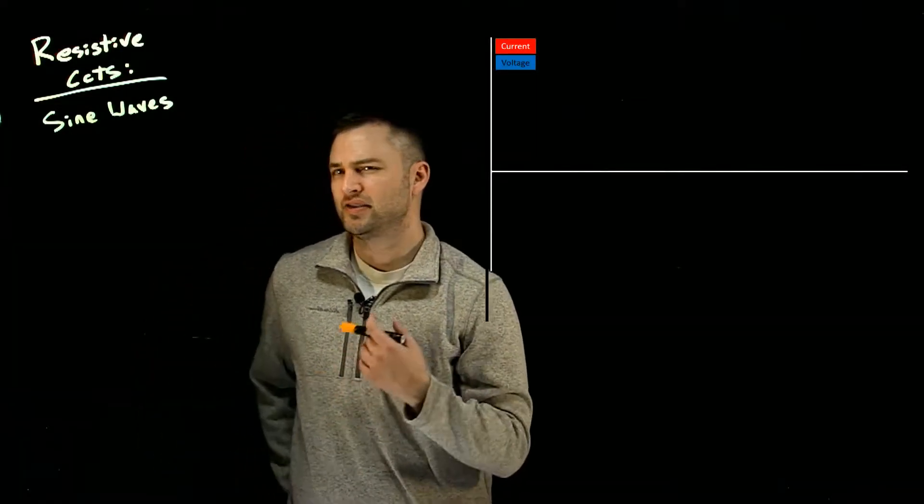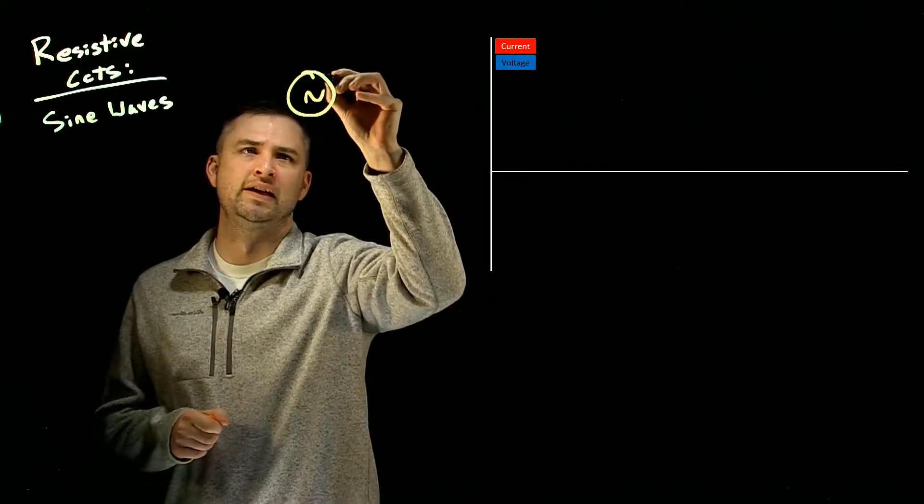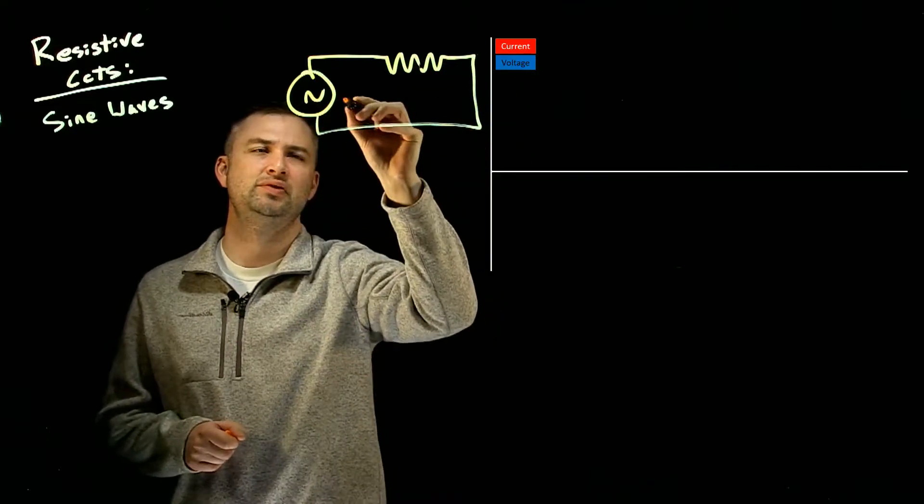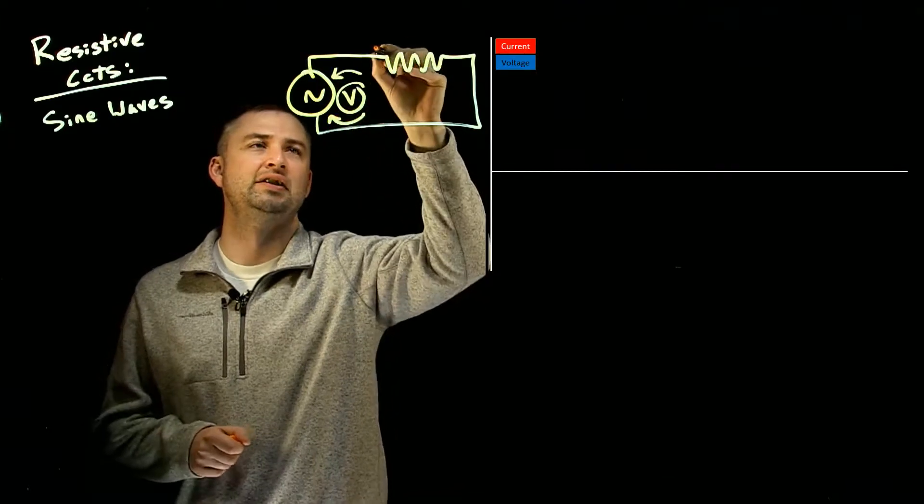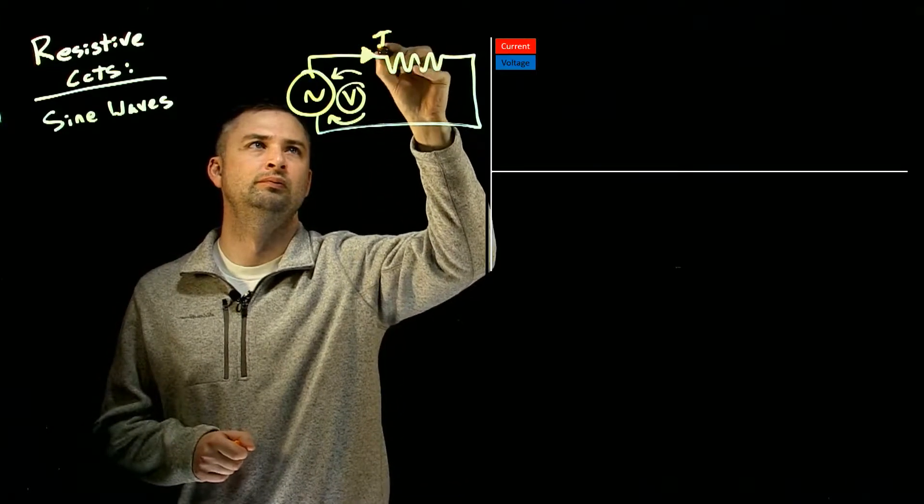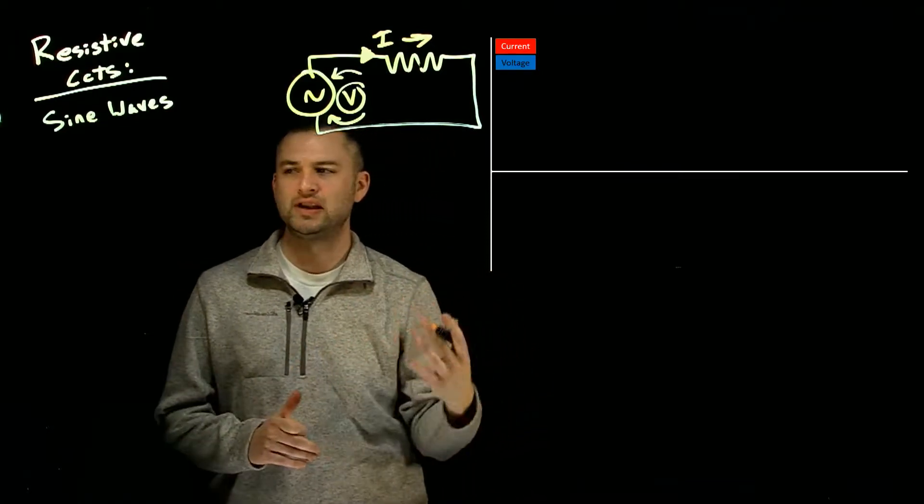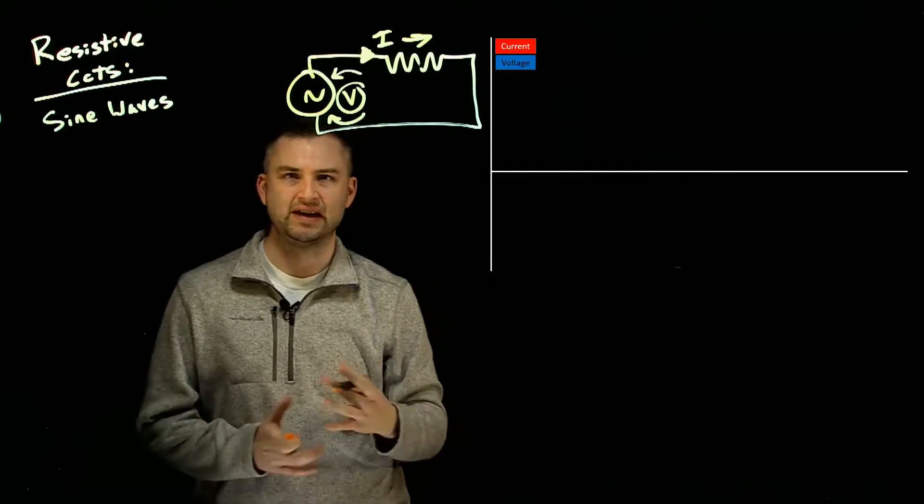In this video, we're going to take a look at a basic AC circuit that involves a resistor. What we want to figure out is, what is the relationship between the voltage of the source and the current that goes through the resistor? What is the time relationship between these two things? We're going to graph them out and see exactly what I mean.